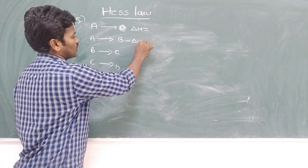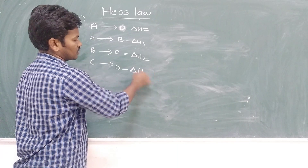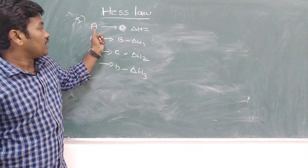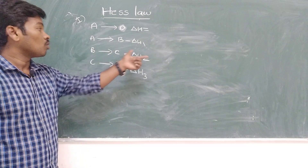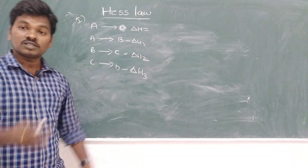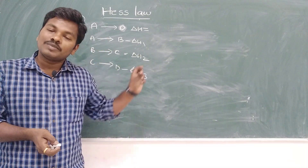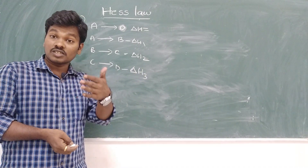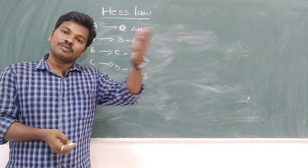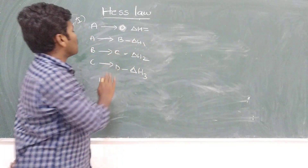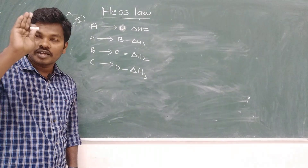In the multi-step method, the enthalpy values are ΔH1, ΔH2, and ΔH3. Hess's Law states that whether A is converted into D in a single step or three different steps, the enthalpy change is the same. According to Hess's Law, the enthalpy change is independent of the intermediate steps — it depends only on the initial and final states.